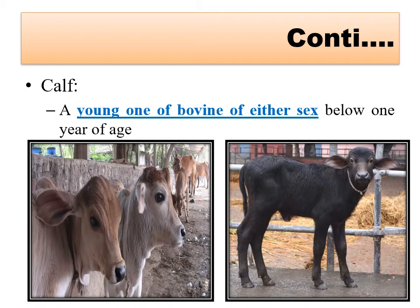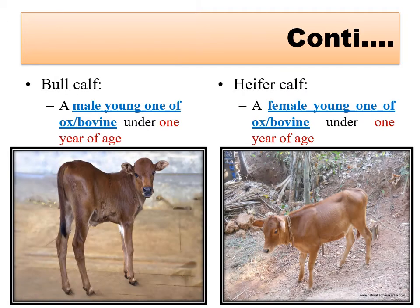A calf is a young one of bovine of either sex below one year of age. It means a young one of cattle or buffalo, whether male or female, below one year of age, is called a calf.